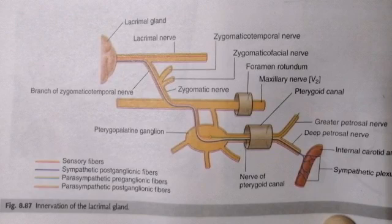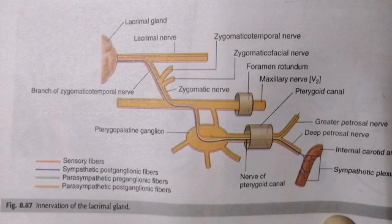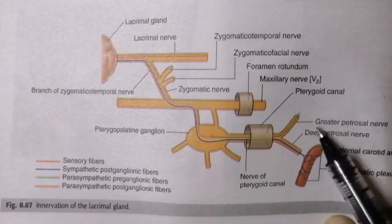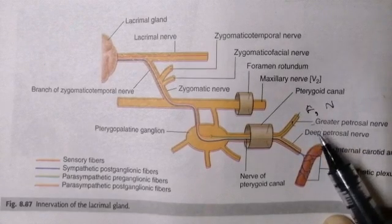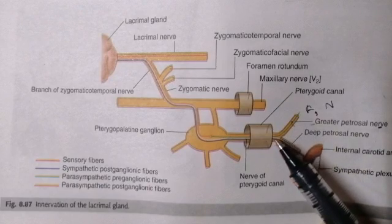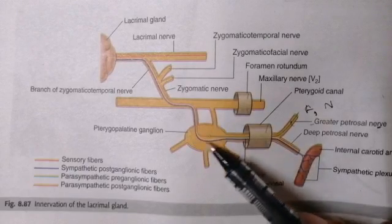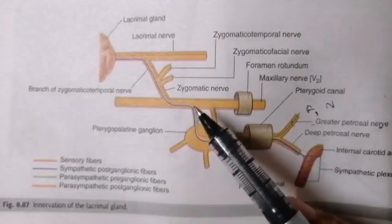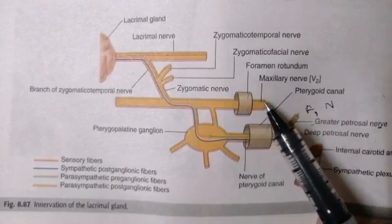The parasympathetic innervation — also called secretomotor innervation — has both preganglionic and postganglionic fibers. The preganglionic fibers come from the greater petrosal nerve, which arises from the facial nerve. The greater petrosal nerve passes through the pterygoid canal to become the nerve of the pterygoid canal, synapsing in the pterygopalatine ganglion.